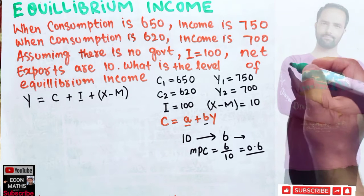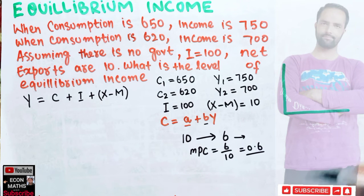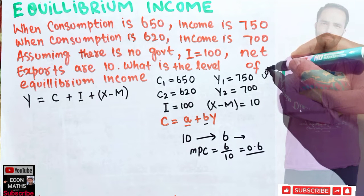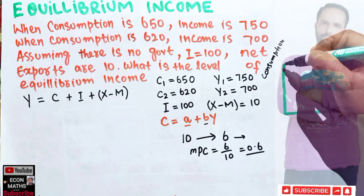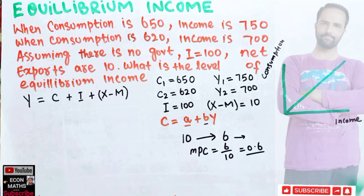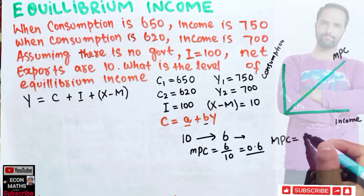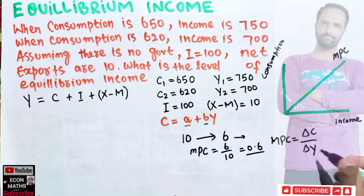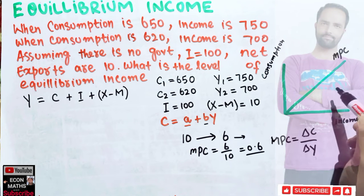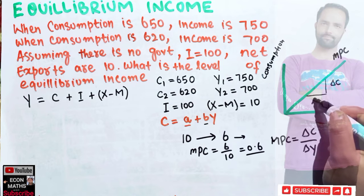We can also illustrate this graphically. We draw a graph with consumption on one axis and income on the other. The MPC line is a straight line showing that marginal propensity to consume equals change in consumption divided by change in income.